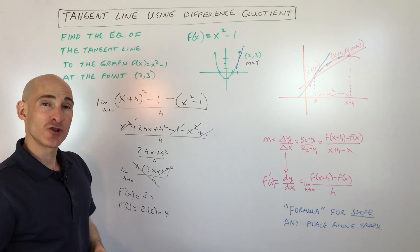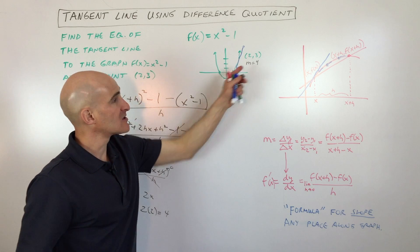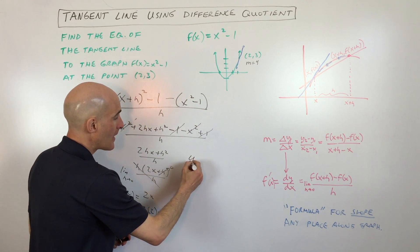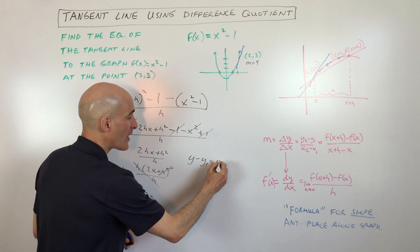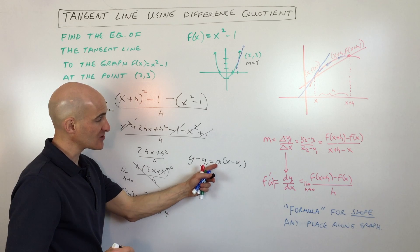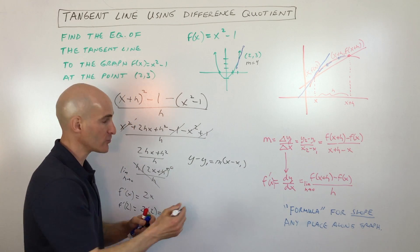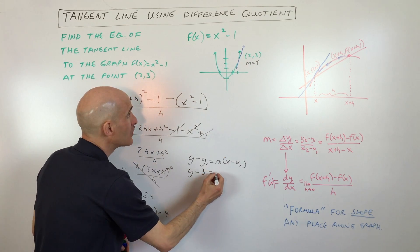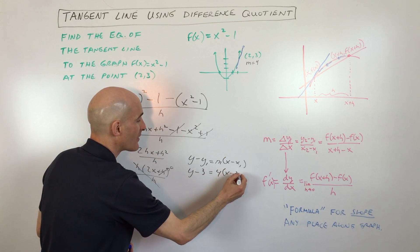So you can use the slope intercept form, but if you have a point and a slope, it's going to be easier to use the point slope form. So just a quick refresher here. Point slope form is y - y₁ = m(x - x₁). m is the slope of the line, and (x₁, y₁) is the point that the line goes through. So we have y - 3 = 4(x - 2).